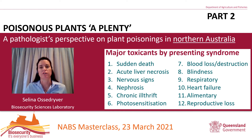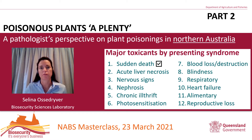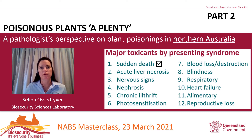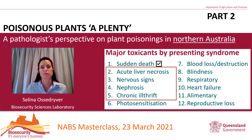Earlier today I covered general information on steps to diagnose plant poisonings and discussed the types of plant toxins likely to cause sudden death syndromes. For the second part of my presentation today I'll be continuing directly on and will cover the presenting syndromes of acute liver necrosis, nervous signs, nephrosis, and chronic ill thrift.